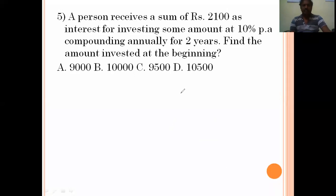A person receives a sum of 2100 as interest for investing some amount at 10% per annum, compounding annually for two years. Find the amount invested at the beginning. We assume the principal amount is 100 rupees. In that case, amount is 100 plus 10, that's 110, raised to the power of 2, which is 12100. Put the decimal before two digits. This value is 121 rupees. Whenever we invest 100 rupees, we get amount as 121. Now the interest we get is 21, which is 121 minus 100, amount minus principal.